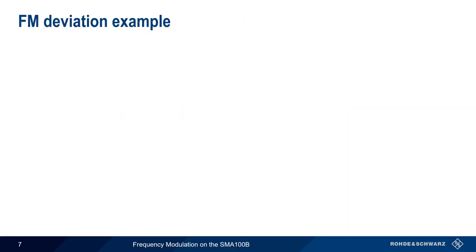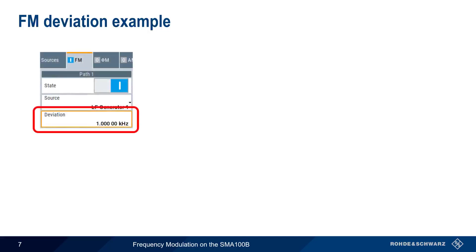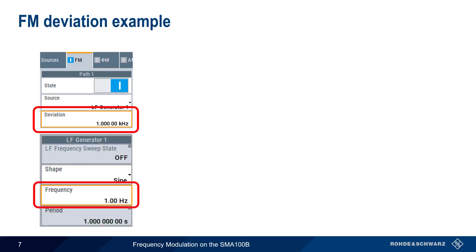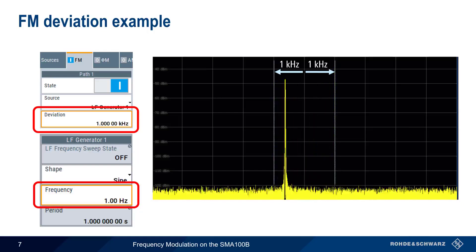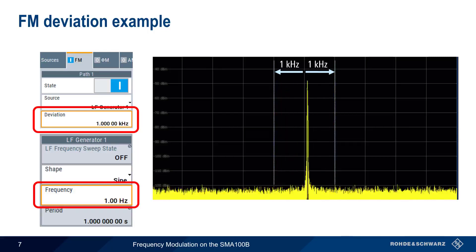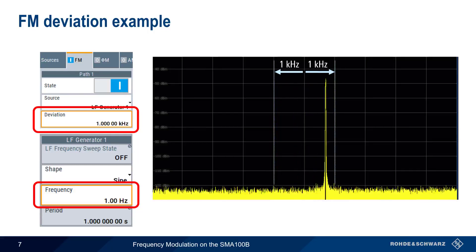It might be helpful to pause for a moment to explain deviation. We'll use an FM signal with a deviation of 1 kHz. The modulation source will be the LF generator, producing a sine wave with a frequency of 1 Hz. If we look at the generated signal on a spectrum analyzer, we see the carrier deviates 1 kHz above and 1 kHz below the center frequency every 1 second. Increasing the deviation would increase how far the carrier deviates from the nominal center frequency, and increasing the frequency would cause the carrier to move back and forth between these upper and lower limits more quickly.